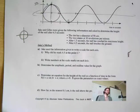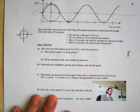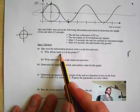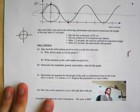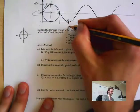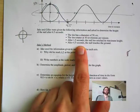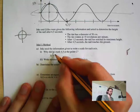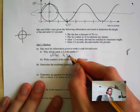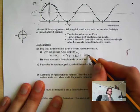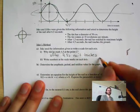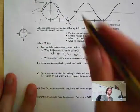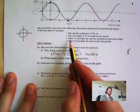Jake used the information to write the scale of each axis. First he did, why did he mark 4.5 at point C? Because after 4.5 seconds, the nail touches the ground. That's simple. When it touches the ground, that's our minimum.